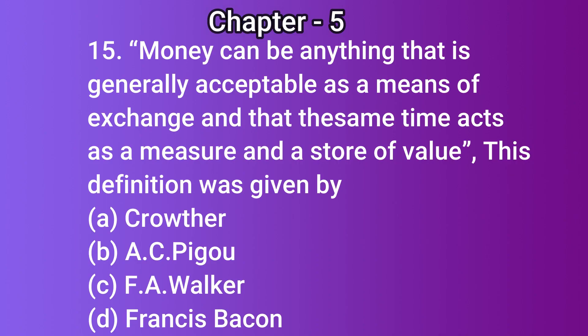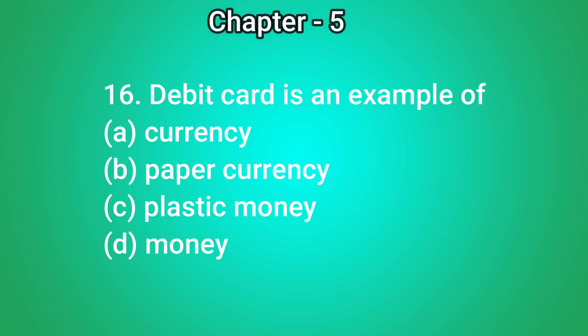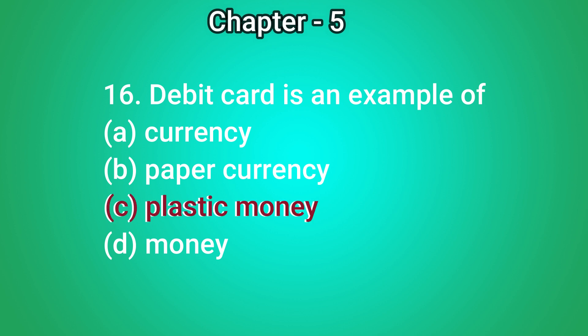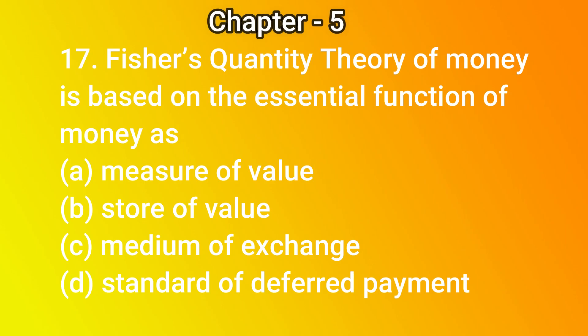Question number 15: 'Money can be anything that is generally acceptable as a means of exchange and that at the same time acts as a measure and a store of value.' This definition was given by — A) Crowther, B) A.C. Pigou, C) F.A. Walker, D) Francis Bacon. The correct answer is A) Crowther. Question number 16: Debit card is an example of — A) currency, B) paper currency, C) plastic money, D) money. The correct answer is C) plastic money.